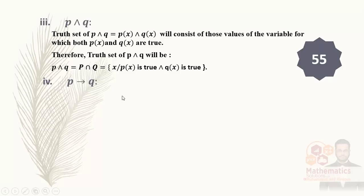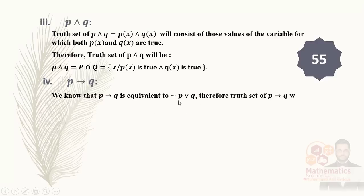Fourth, we discuss implication — P implies Q. We know that P implies Q is equivalent to negation of P or Q. Therefore the two set of P implies Q — negation comes in here. These are all the same concepts we studied in Exercise 2.4, just being converted into two set form and viewed in that way.